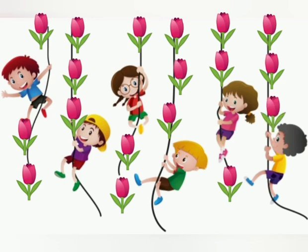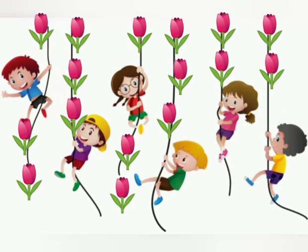I distributed all the flowers in 3 turns and each child now has 3 flowers. 1, 2, 3.